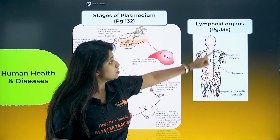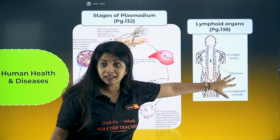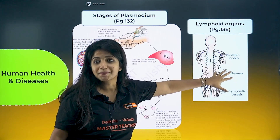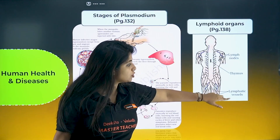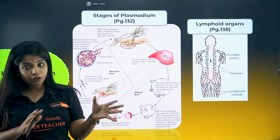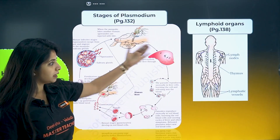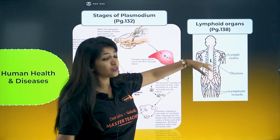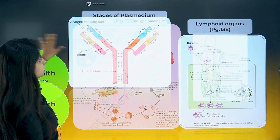Next are lymphoid organs. You can be asked — what is this? Explain it as thymus. Lymph nodes and lymphatic muscles have been mentioned. Lymphoid organs is a very important topic, and this picture can come, so don't take the risk.